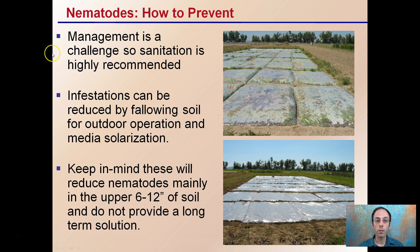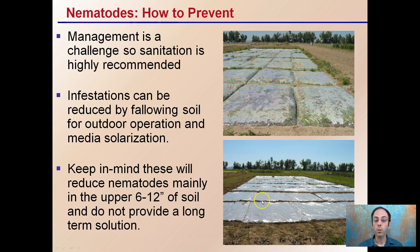How to prevent them? Management is a challenge, so sanitation is highly recommended. Infestations can be reduced by fallowing soil for outdoor operations and media solarization. Solarization refers to covering the area in clear plastic and heating the soil up to extreme temperatures, causing the nematodes — which are again animals — to die. Keep in mind this reduces nematodes mainly only in the upper 6 to 12 inches of soil and does not provide a long-term solution. This is good for areas where you have increased pressure. You may want to do this once, pull the plastic up or take the media out, remix it, and do it again to ensure you're getting an even kill throughout the entire profile.